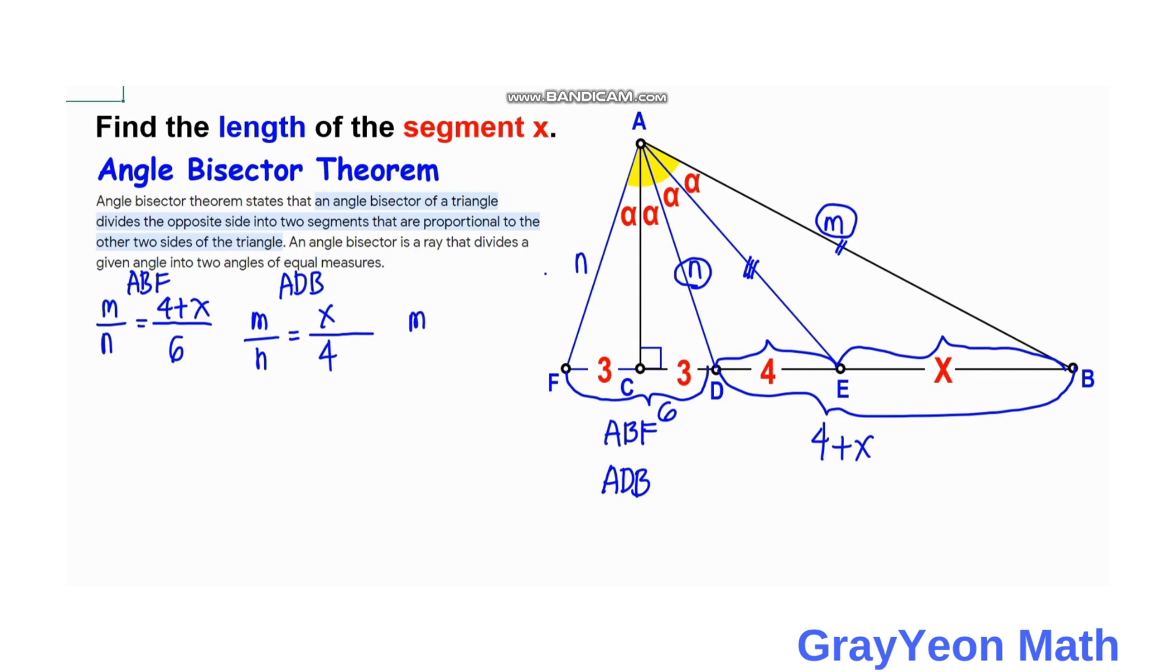We can divide the denominators by 2, so 3 and 2. If we cross multiply, 2 times x plus 4 equals 3x. So 2x plus 8 equals 3x. Continuing, we have 3x minus 2x equals 8, so x equals 8.